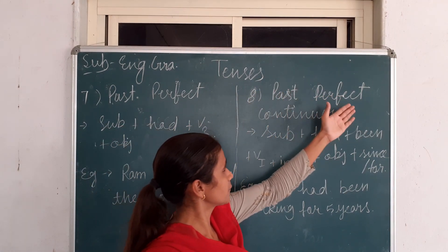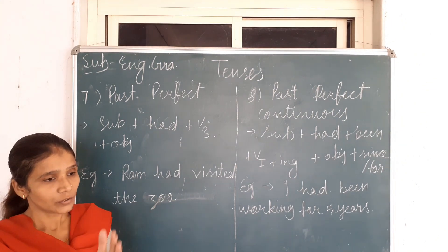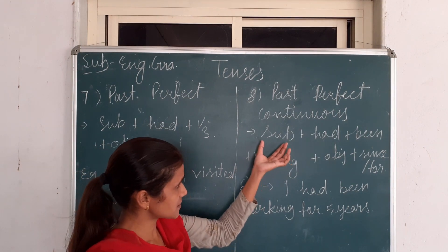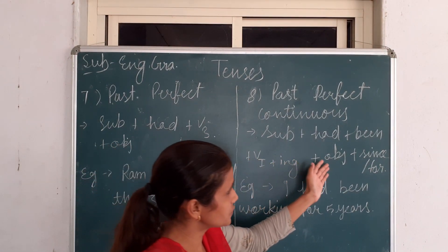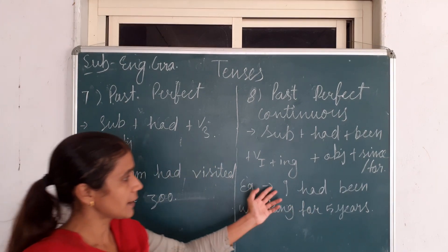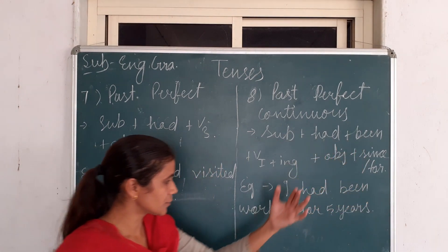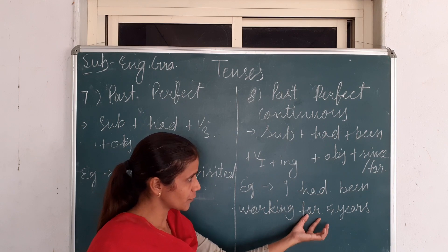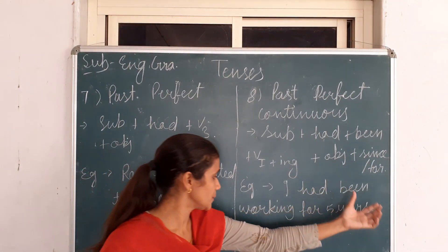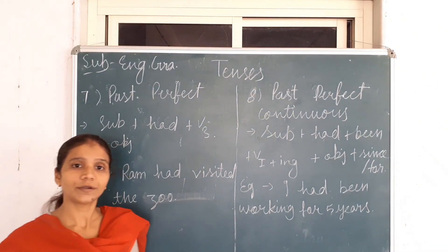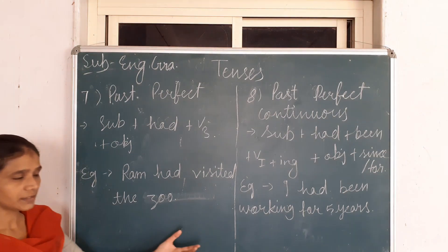Now we will discuss about Past Perfect Continuous Tense. This is used when actions had already started and were still ongoing and unfinished. Sentence structure: Subject + had + been + first form of the verb with ING + Object, and at the end 'since' or 'for.' Example: 'I had been working for five years.' We use 'for' here because 'five years' is a period — we don't know which five years. Negative: 'I had not been working for five years.' For interrogative, we place the helping verb at the start, then the remaining part, with a question mark at the end.